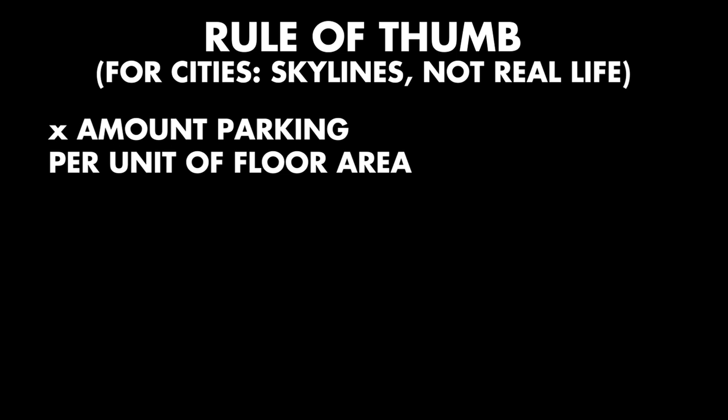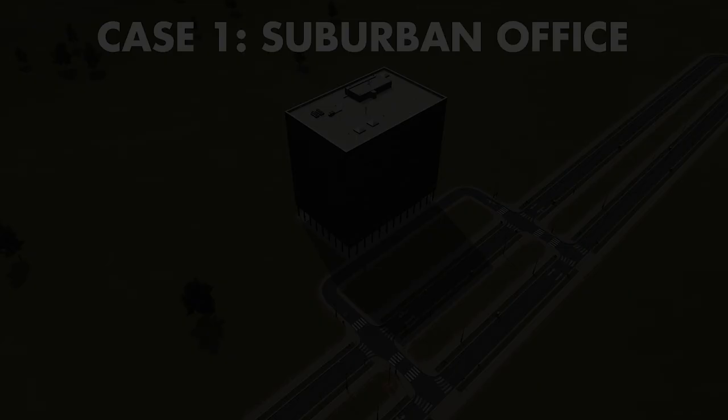Let's start with the rule of thumb. You need X amount of area of parking per each unit of floor area. X is somewhere between 0.75 and 2. You should stick with that, and I'll show you how this works in a moment while we look at three case studies.